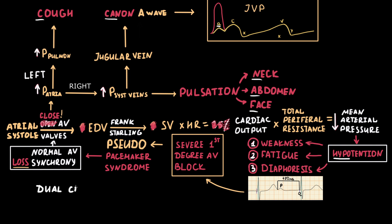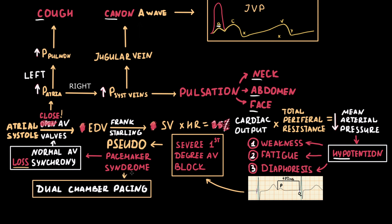For treating this condition, dual-chamber stimulation is usually used. One stimulating electrode is placed in the atrium and another in the right ventricle, so the atria are stimulated first and ventricular stimulation follows. This type of stimulation restores atrioventricular synchrony, which in turn restores cardiac output and relieves symptoms.